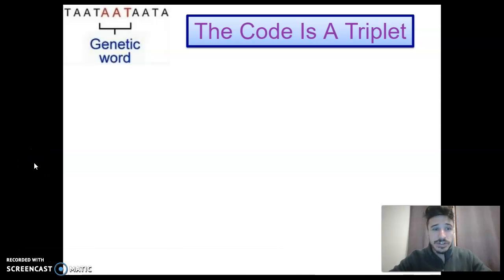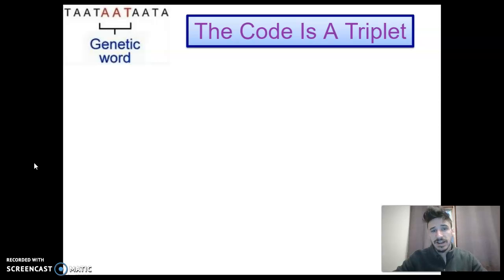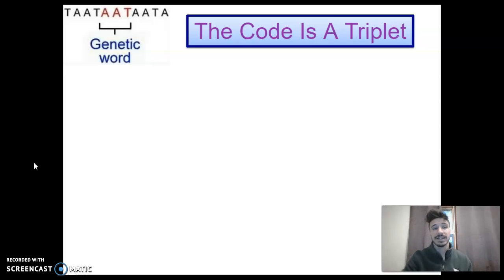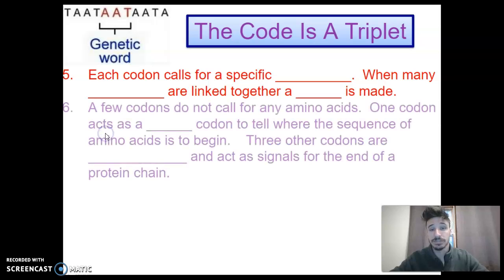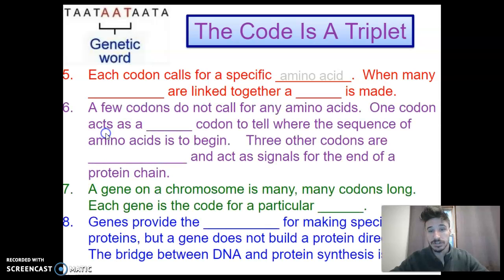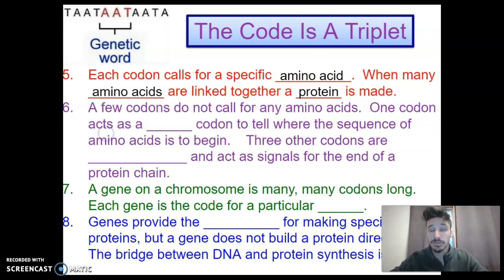All right, ladies and gentlemen, we're going to continue on with this idea of a codon — a series of three nucleotides that code for a specific amino acid. Those amino acids then come together to make proteins, and that's like the ultimate bridge between genotype and phenotype. Each codon calls for a specific amino acid, and when you have many amino acids linked together, that's when a protein is made.